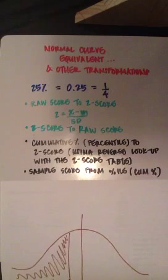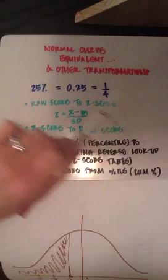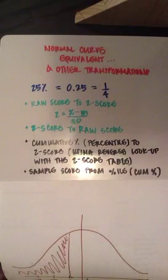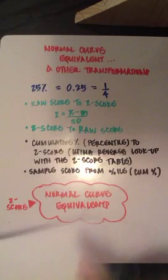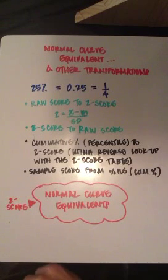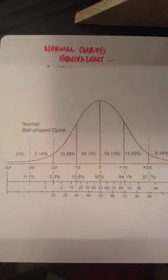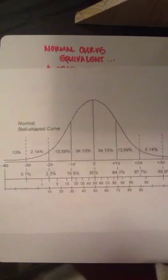But essentially, just as you can do all of these transformations with a z-score, you can also transform a z-score to a normal curve equivalent. Now, why on earth would you want to do something like that?